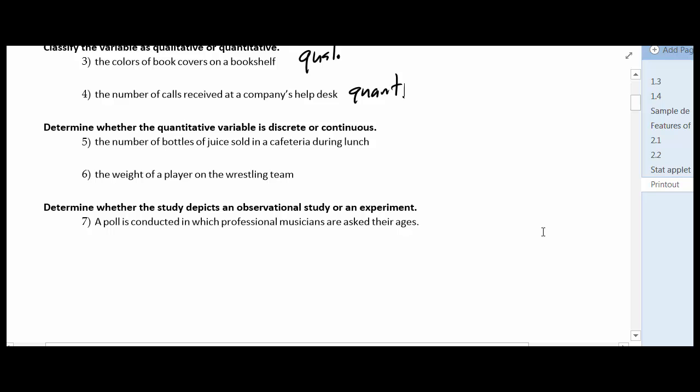Next question, determine whether the quantitative data is discrete or continuous. Again, discrete means that there is a fixed value that we can have. We can have two of something, three of something, four of something. Continuous means that we can have a fractional part, a decimal part included, and it really just depends on our accuracy as far as how far we want to go.